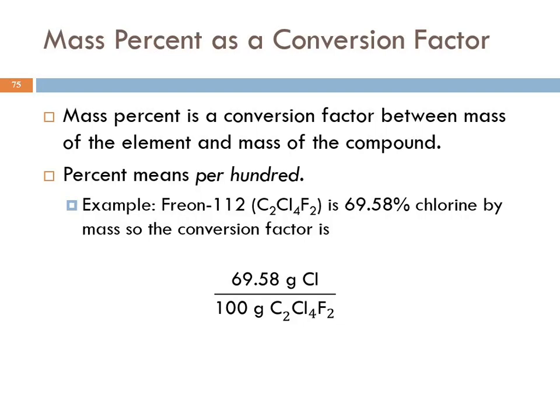Mass percent makes a great conversion factor between the mass of the element and the mass of the compound. It's important to remember that percent means per hundred. How many cents in a dollar? A hundred, right? So this is per hundred. When we see 69.58% chlorine by mass, that's 69.58 grams of chlorine per hundred. Per hundred grams of the whole thing. Per hundred grams of this formula.